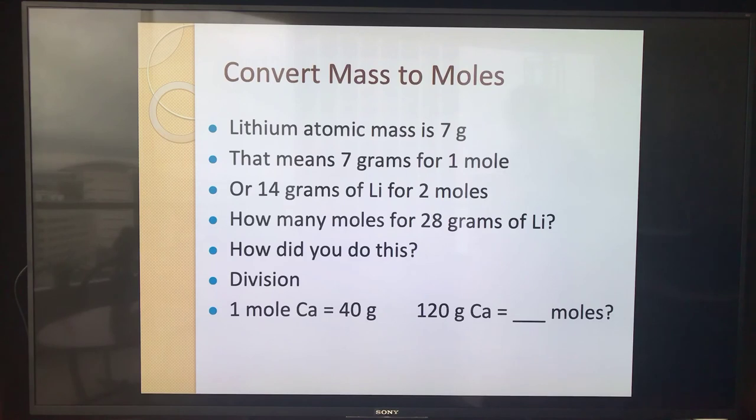We took the mass, divided by the atomic weight, and got the number of moles. So in this case, if you look at your periodic table, you'll see that the atomic mass of calcium is 40 grams for 1 mole. So if I gave you 120 grams, how many moles did I give you? Well, we're just going to divide. So 120 divided by 40 will be 3 moles. So 120 grams of calcium is 3 moles. That's converting from mass to moles.